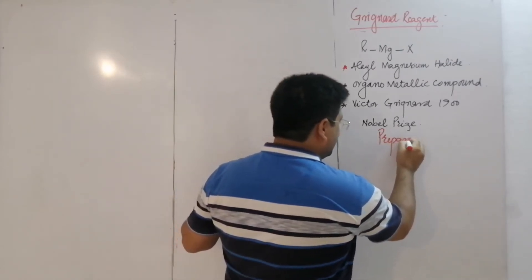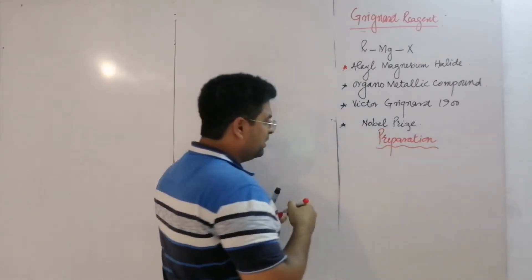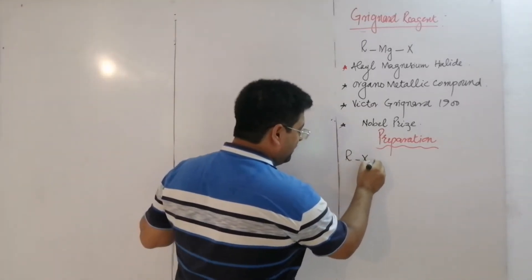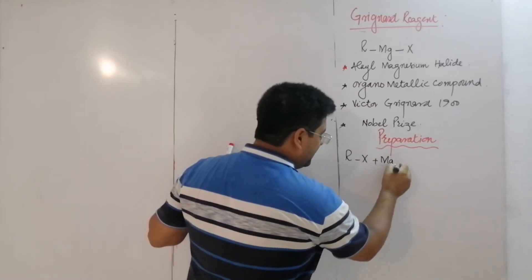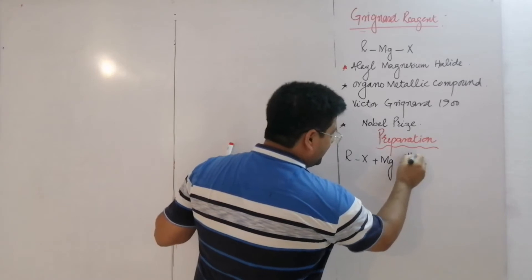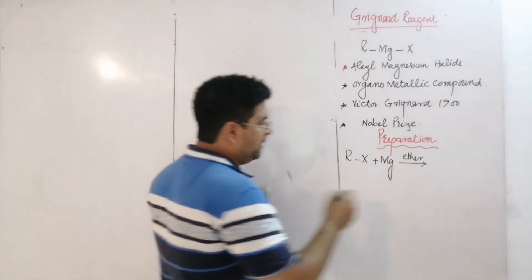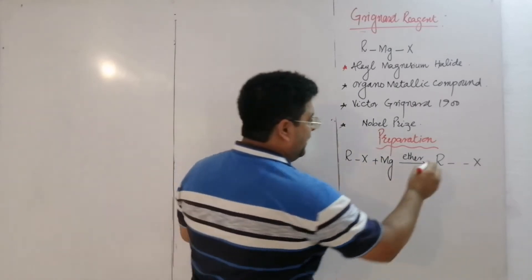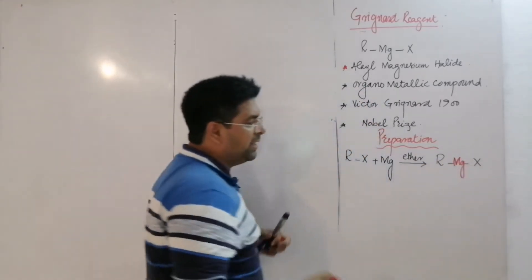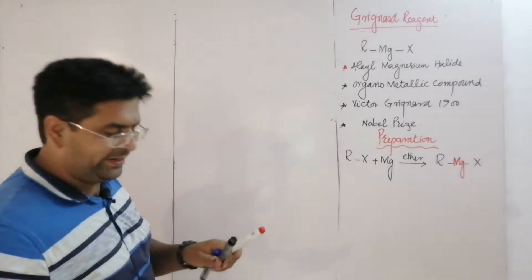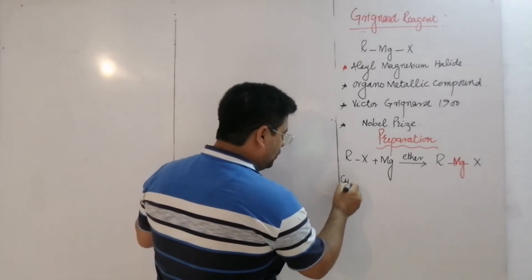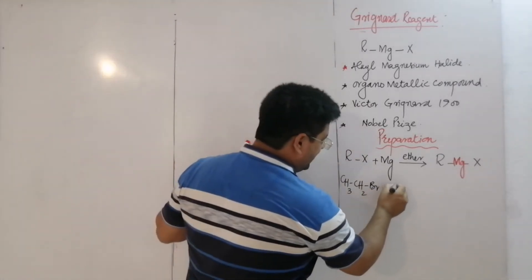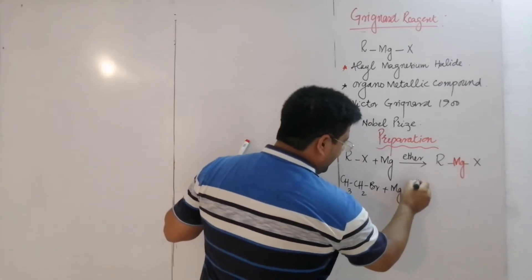How is Grignard Reagent prepared? Grignard Reagent is prepared by the reaction of alkyl halide with magnesium metal in the presence of ether as a solvent. When alkyl halide reacts with magnesium in ether solvent, the magnesium metal attaches to the center of the alkyl halide.